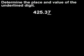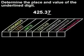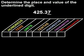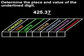To find the place and value of the underlined digit, let's start with the place value chart. The digits to the left of the decimal have the same place values that we've used in the past: units, tens, hundreds, and so on.